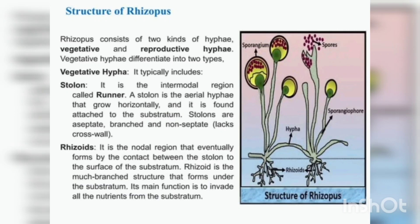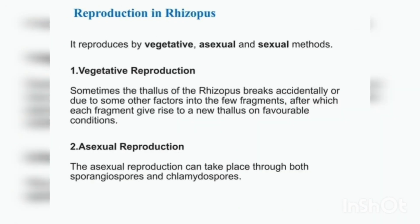There are two kinds of hyphae: vegetative hyphae and reproductive hyphae. The vegetative hyphae are of two types — stolons and rhizoids. Stolons grow horizontally along the substratum; the internodal region is called the runner. Stolons are aseptate, branched, and non-septate aerial hyphae attached to the substratum. Rhizoids arise from the nodal region and form contact between the stolon and the surface of the substratum. The main function of rhizoids is to absorb nutrients from the substratum.